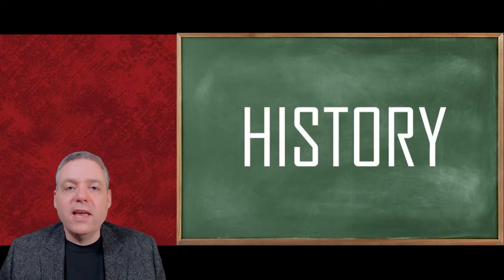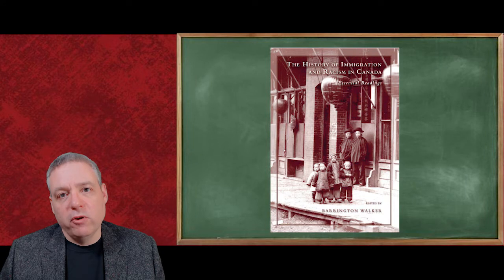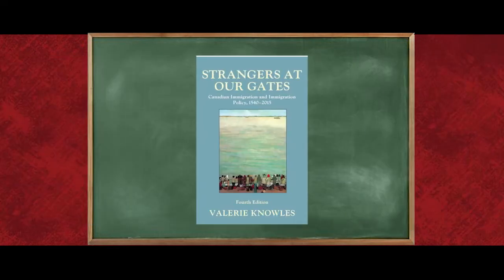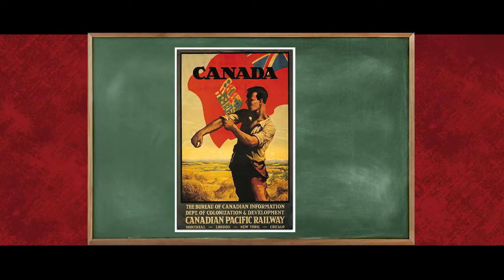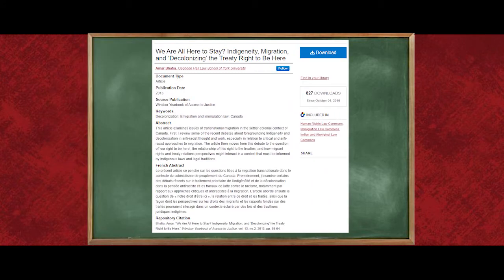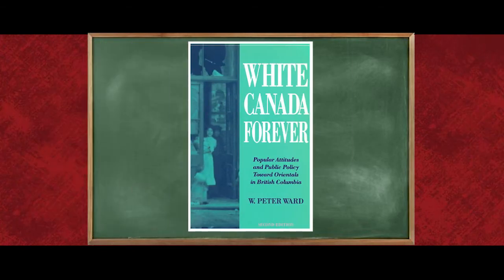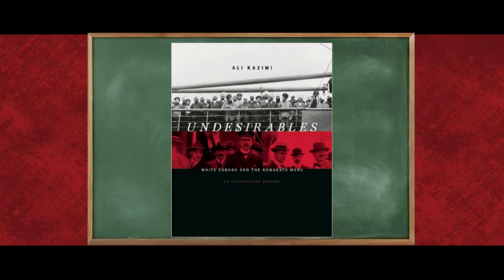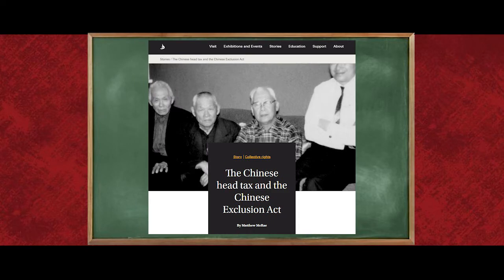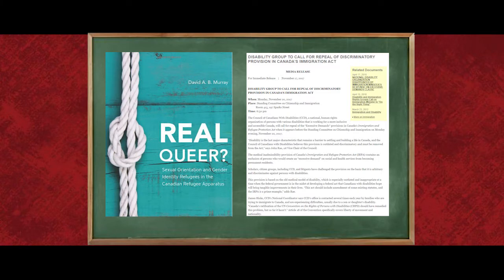Let's begin with history. Canada has a troubling history when it comes to immigration. Any account of that history must begin by acknowledging that immigration was, from the outset, a tool of colonization. It was the primary means through which land belonging to Indigenous peoples was wrested away for use predominantly by European settlers. For much of Canadian history, immigration was also explicitly racist, with many steps taken to prevent immigration by anyone not considered white, with a particular focus on limiting immigration from Asia. Other groups have also been systematically excluded, including people with disabilities and people with diverse sexual orientations and gender identities.